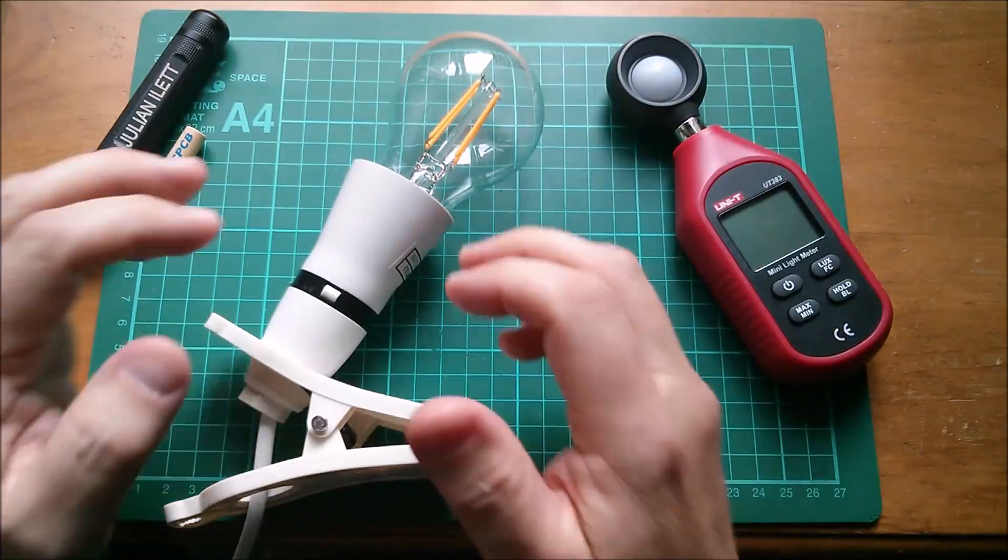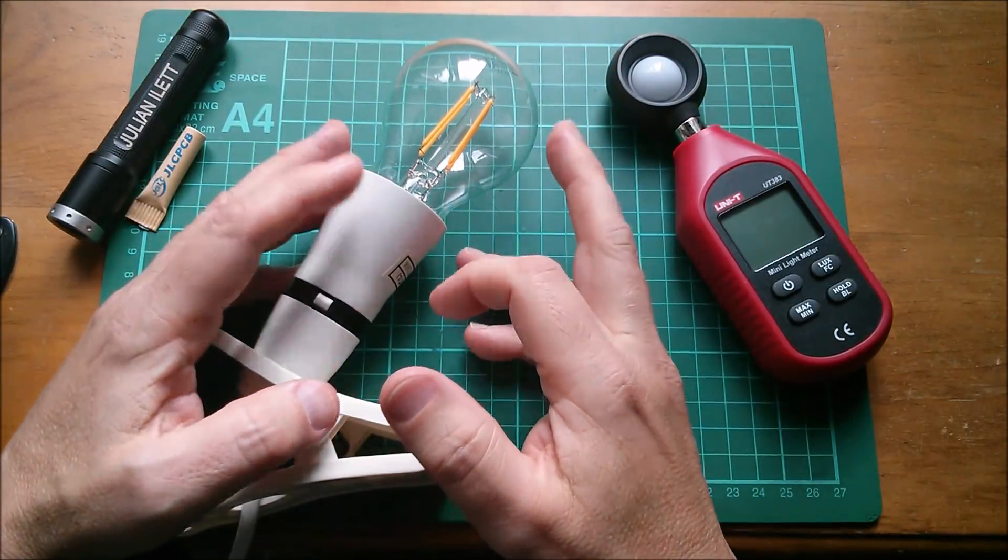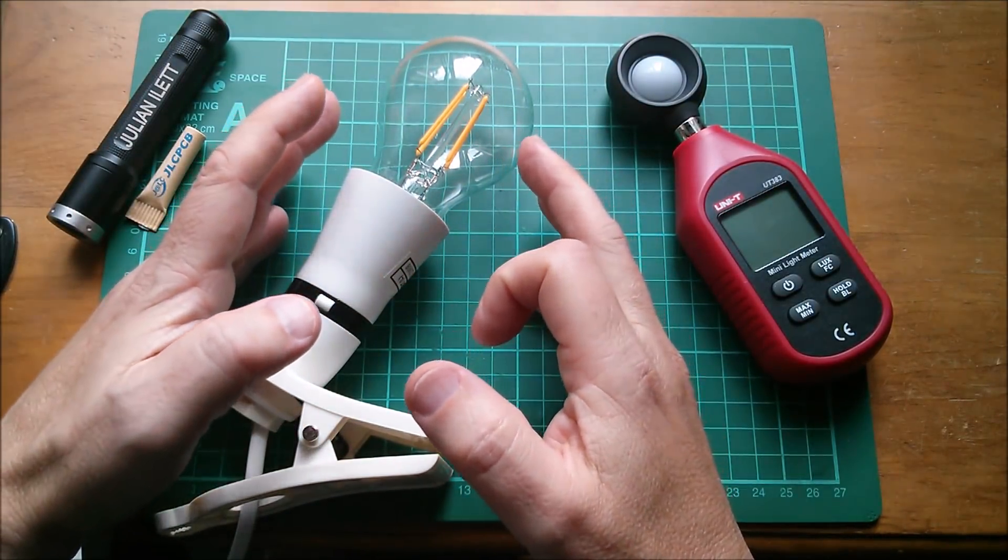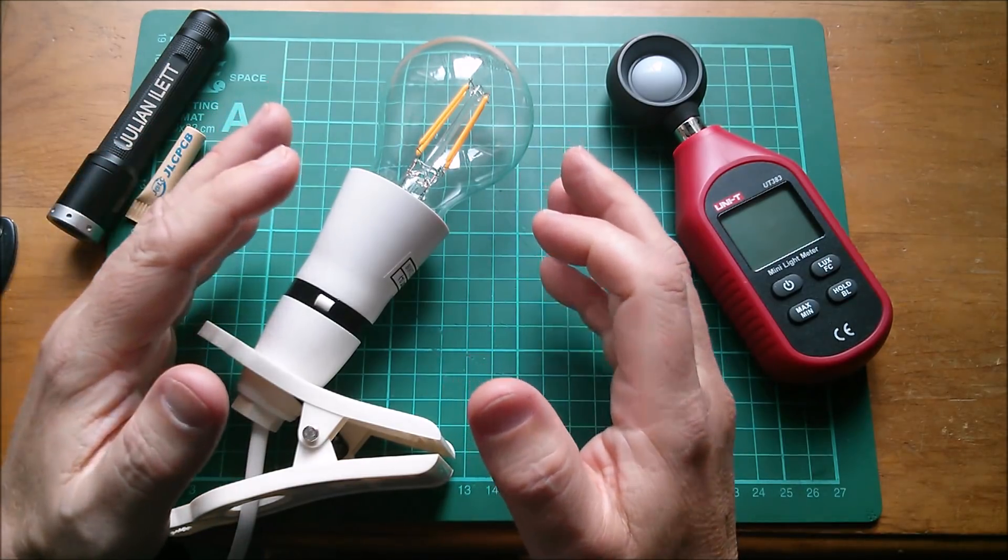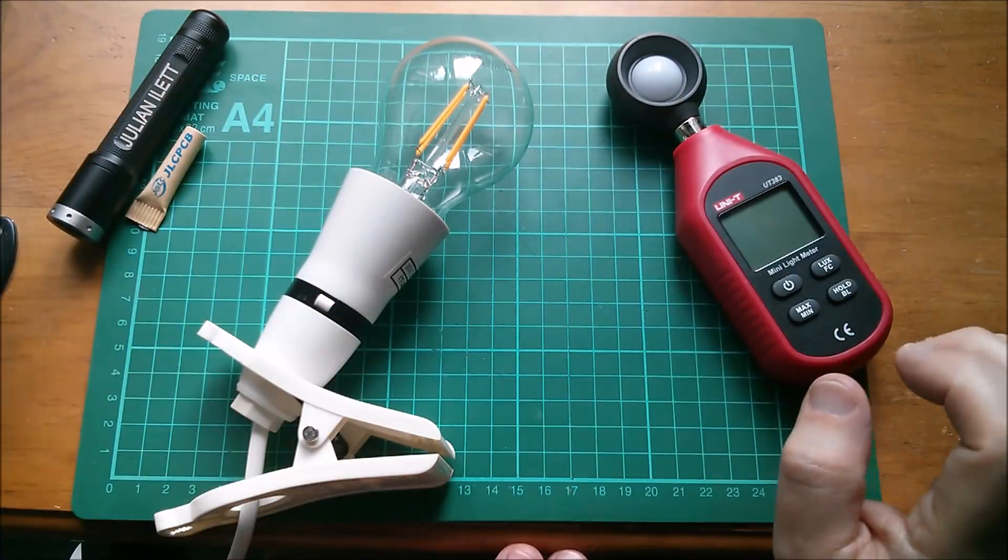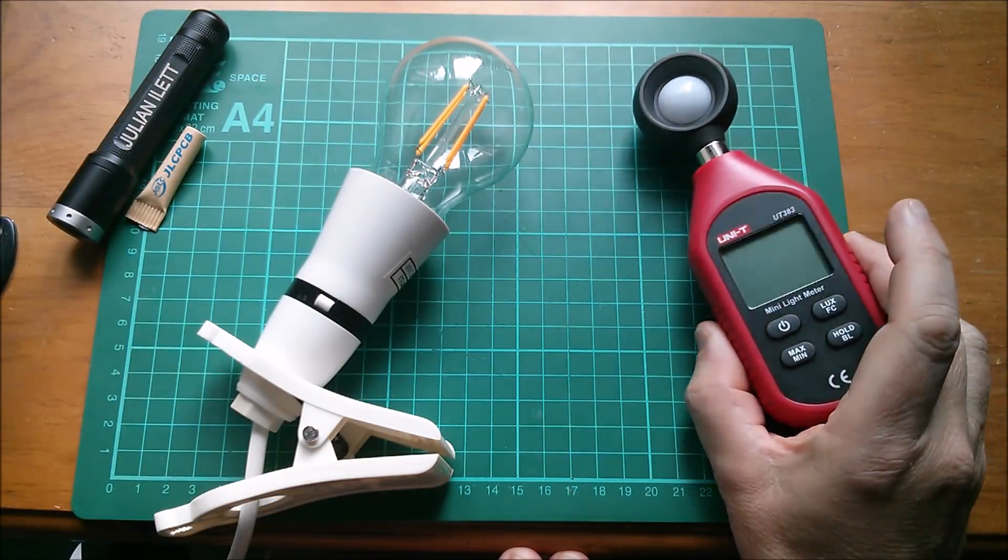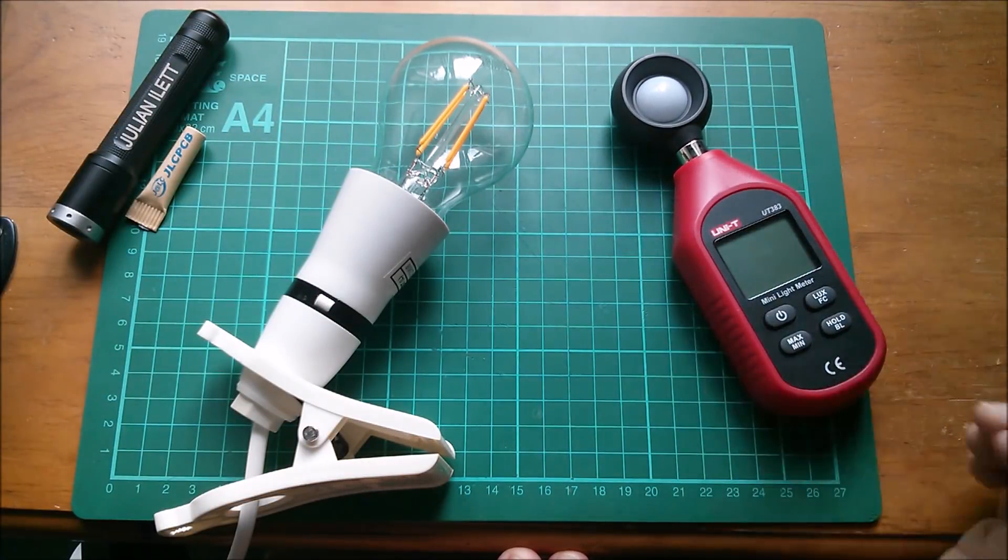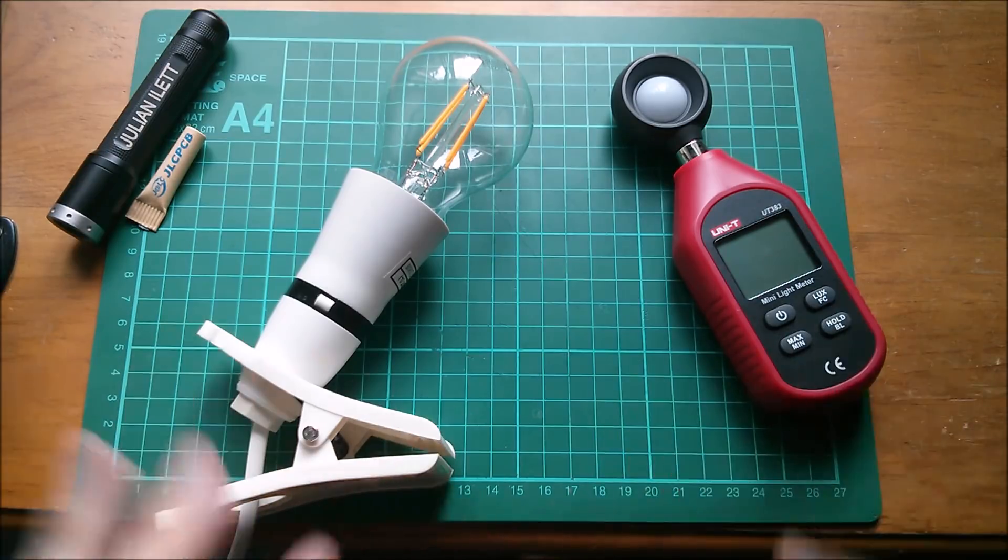Now there is one thing here which gives me a little bit of hope. Lumens are related to lux in that one lux is one lumen per square meter. So if I could get all of the 806 lumens which are coming out of this light bulb and get them to fall on exactly one square meter of area, then this should measure 806 lux. How am I going to do that?